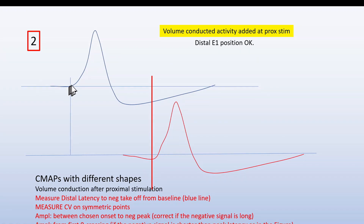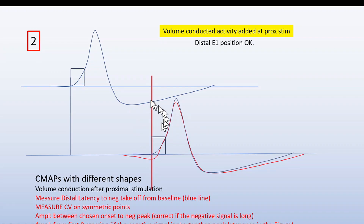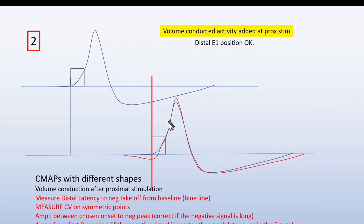Here is another situation where we have a very good signal at the proximal stimulation but a different shape at the distal stimulation. For example, in median stimulation, we have early components here in the positive-going direction — this is the volume-conducted activity from forearm muscles. In this situation, we measure the distal latency to this takeoff, but for conduction velocity we use symmetric points. One way to do that is to superimpose: placing the blue signal here, you can see the blue takeoff and the similar takeoff for the proximal stimulation, with this as a new baseline and this as the first takeoff from the baseline. This is based on an absolute superimposition of the signals.